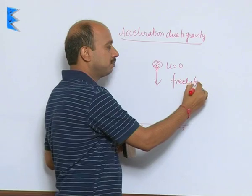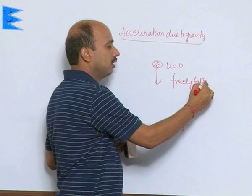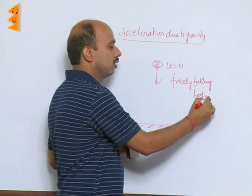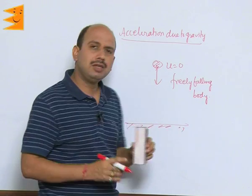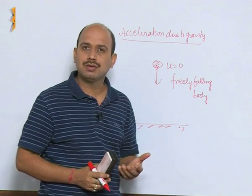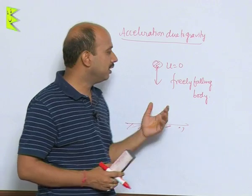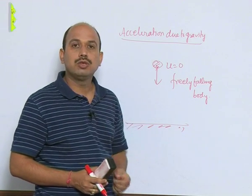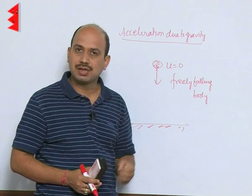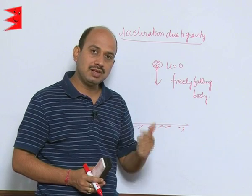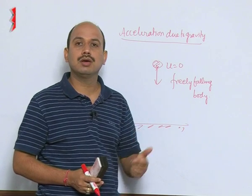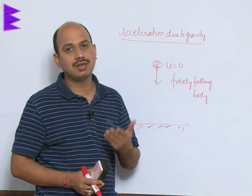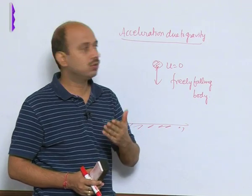Whenever any object is released from a height, we refer to it as a freely falling body. The uniform acceleration produced in a freely falling body under gravity is known as acceleration due to gravity.